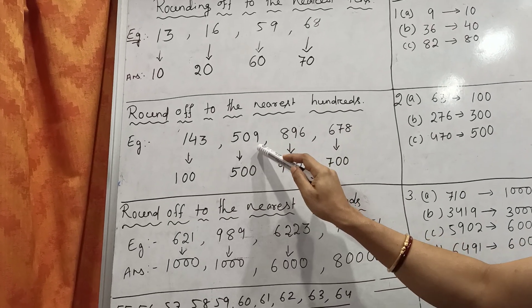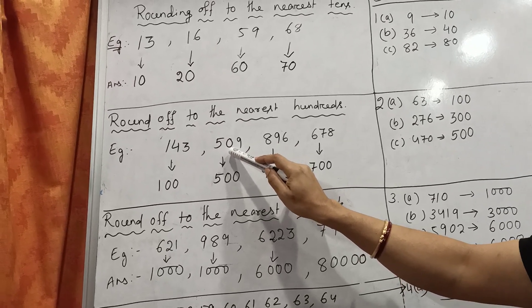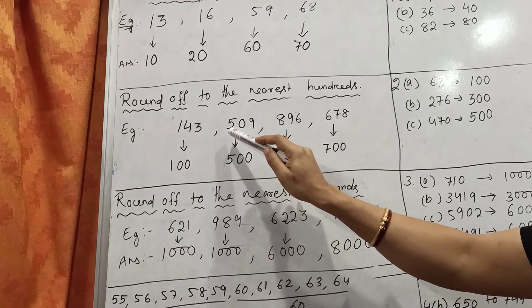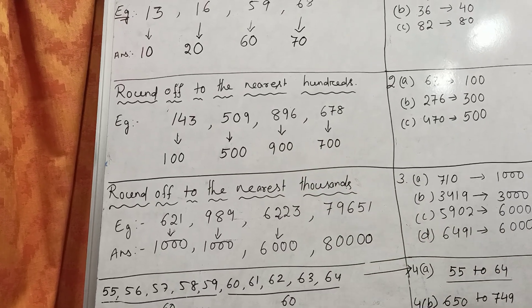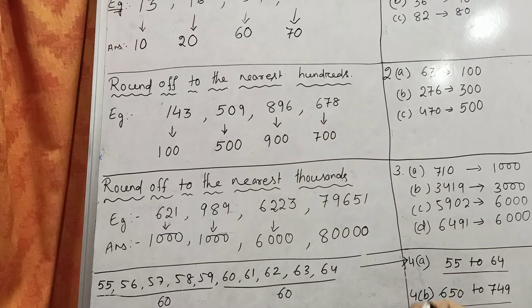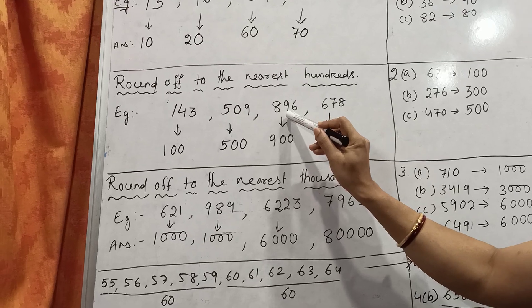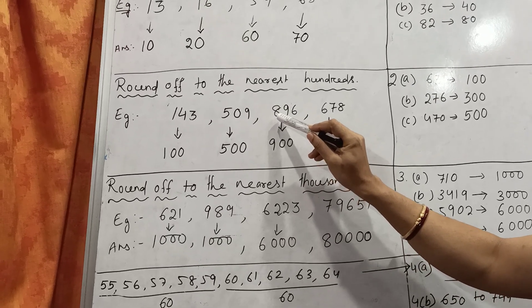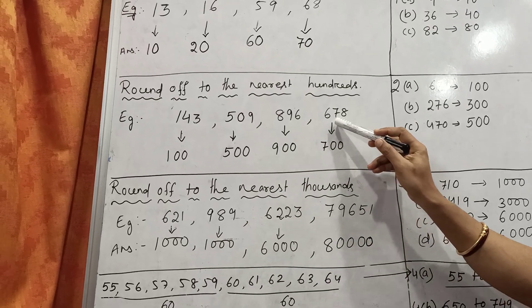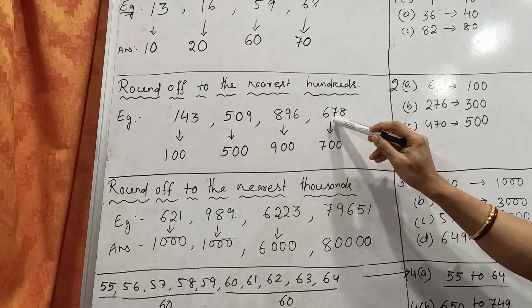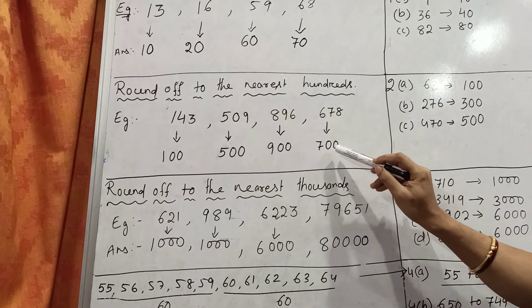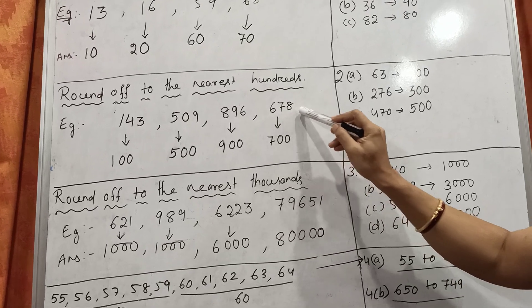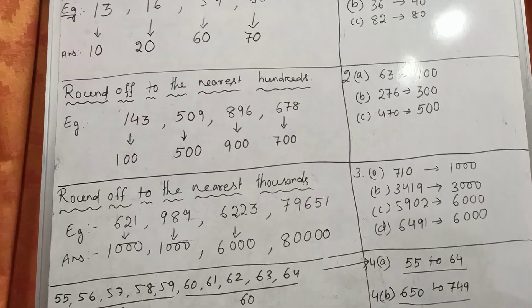The next example is 509. Here the tens digit is 0, which is less than 5. So the tens and units places become 0, 0 and the hundreds digit remains the same. So 509 rounded to the nearest 100 is 500. Next is 678. The tens digit is 7, which is more than 5. So the tens and units places become 0, 0 and the hundreds digit is increased by 1: 6 plus 1 is 7. So 678 rounded to the nearest 100 is 700.